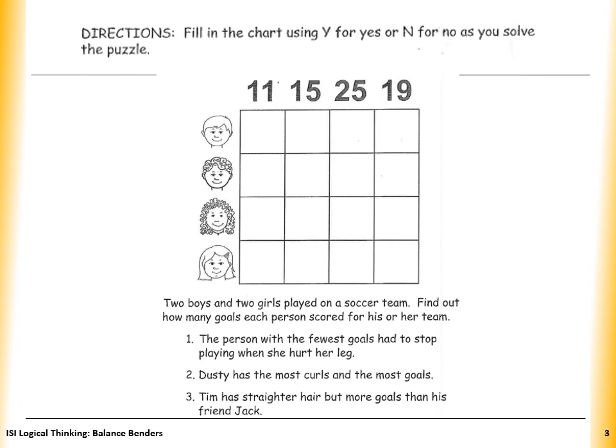The first clue tells me: the person with the fewest goals had to stop playing when she hurt her leg. So we are talking about a girl because we have 'she' and 'her leg.' We are talking about one of these two girls, and the fewest goals, which is 11 — the smallest number in this chart. But this clue didn't help us much, so we move to the other one.